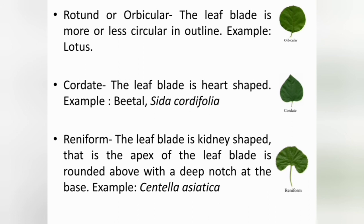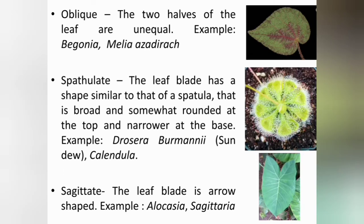Cordate leaves: the leaf blade is heart-shaped. E.g., Betel and Pseudocordata. Reniform leaves: the leaf blade is kidney-shaped — the apex is rounded above with a deep notch at the base. E.g., Centella asiatica. Oblique leaves: the two halves of the leaf are unequal. E.g., Begonia, Melia, Azadirachta.